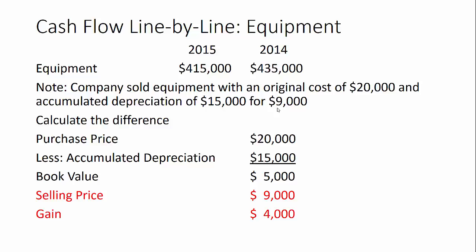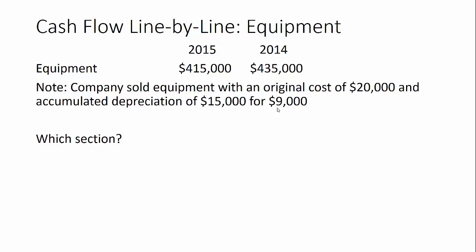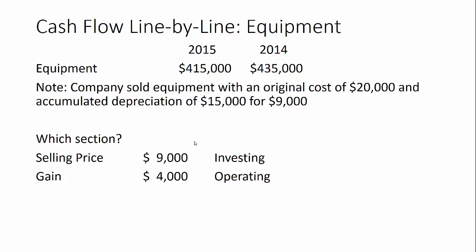The nine thousand dollars goes into the investing section — whenever we buy or sell long-term assets, that's investing. The gain goes in the operating section because it increased our net income by four thousand dollars but no cash was exchanged. If you think about the journal entry when we sold the equipment: credit equipment for twenty thousand, debit accumulated depreciation for fifteen, debit cash for nine, and credit gain on sale of equipment for four thousand.